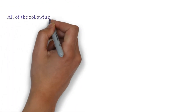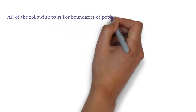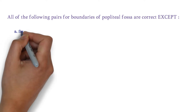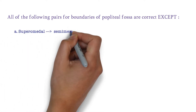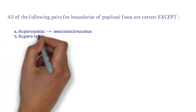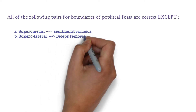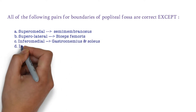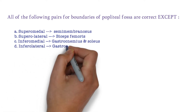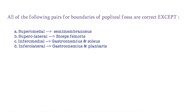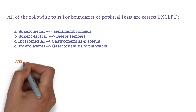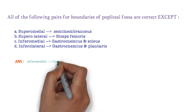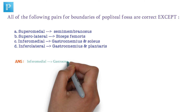Now let me ask you a simple question. All of the following pairs for boundaries of Popliteal Fossa are correct except: the first option is superomedial — semimembranosus; the second option is superolateral — biceps femoris; the third option is inferomedial — gastrocnemius and soleus; and the fourth option is inferolateral — gastrocnemius and plantaris. The correct answer is inferomedial — gastrocnemius and soleus. This is the incorrect statement.